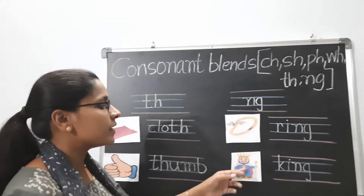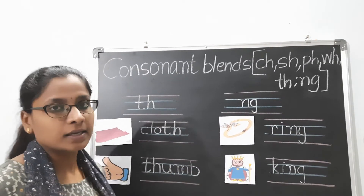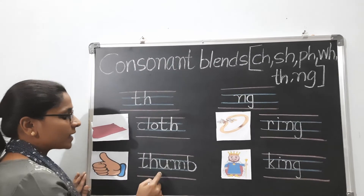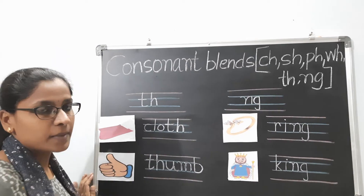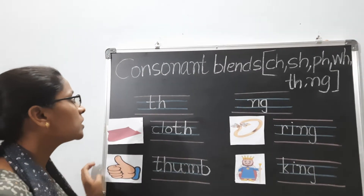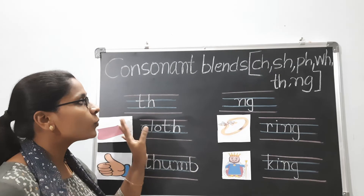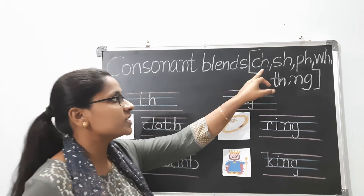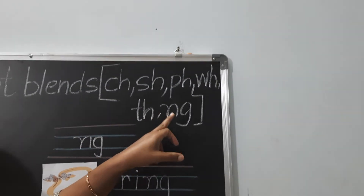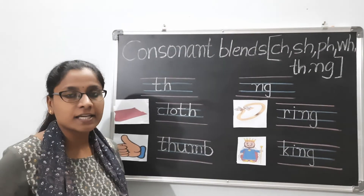Ring and king belong to the NG blend. Cloth and thumb belong to the TH blend. I hope you understood the consonant blends of TH and NG. I hope you understood all the blends of CH, SH, PH, WH, TH, and NG. Okay children, thank you. Bye-bye. Take care.